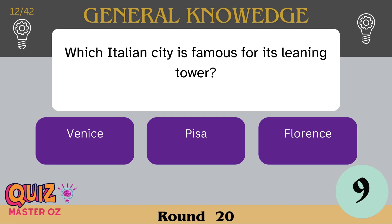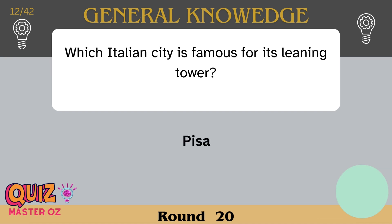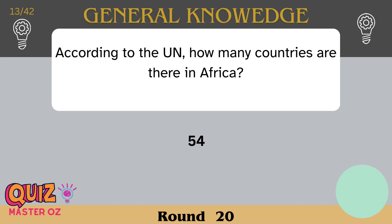Which Italian city is famous for its leaning tower? Pisa. According to the UN, how many countries are there in Africa? 54.